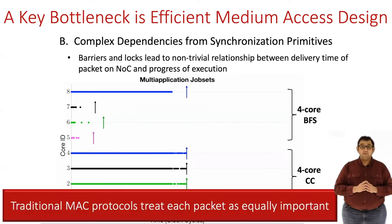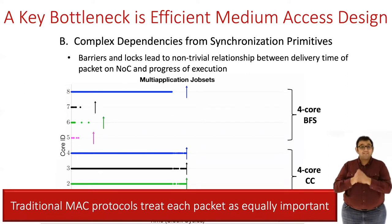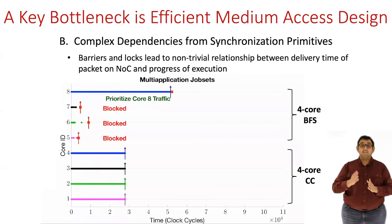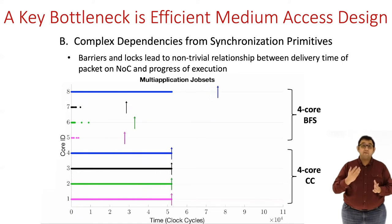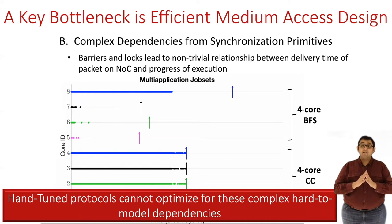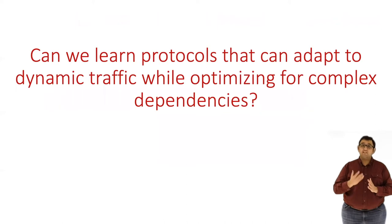Traditional MAC protocols have packet-level fairness, but as we can see, not all packets are equally important in NOCs. Some packets end up blocking the progress on some of the cores, so these packets need to be transmitted faster to speed up the application. The best thing to do is prioritize core 8's traffic until it clears the barrier, allowing the blocked cores to resume execution quickly and thereby improving overall execution time. Such dependencies show up throughout parallel programs and hand-tuning protocols to optimize for them is very hard. So the question we ask is: can we directly learn protocols that can adapt to drastically changing wireless traffic while also accounting for the complex dependencies between threads?